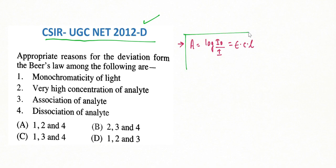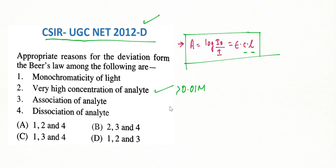We have studied the Lambert-Beer law — absorbance equals log(I₀/I), which equals ε × concentration × path length. One key limitation is that at very high concentration of the analyte (greater than 0.01 M), due to electrostatic attraction, the particles are not free to interact properly with light. If they are interacting with each other, they cannot interact with light properly, and that is why very high concentration causes deviation from Beer's Law.